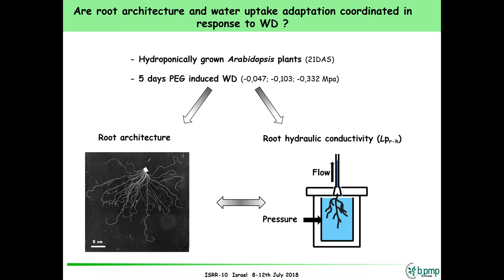The symplastic transport is mainly controlled by a class of proteins called aquaporins. I will not go into details about aquaporins, because if you listened to Christophe's talk yesterday, you probably know a lot about them. The question we wanted to answer is: what happens during drought? What does drought do in terms of controlling root architecture, and is it also controlling aquaporins?